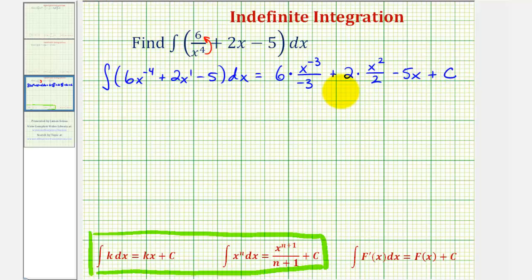Now let's simplify. Notice here we have a common factor of three. This simplifies to one, this simplifies to two. Two over two also simplifies to one over one. So now we have negative two x to the negative three plus x squared minus five x plus c.